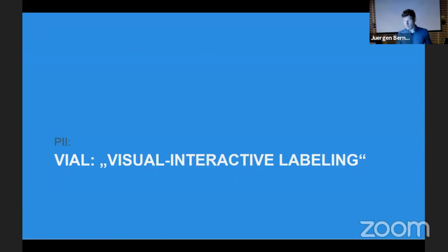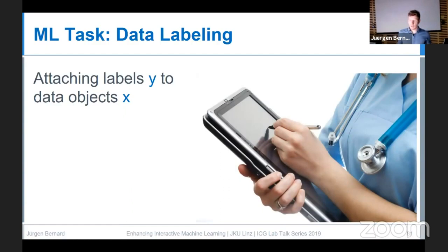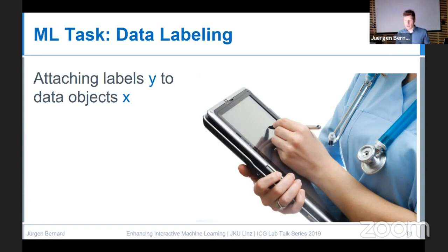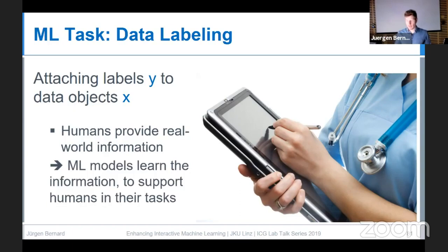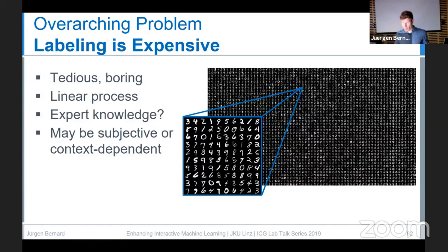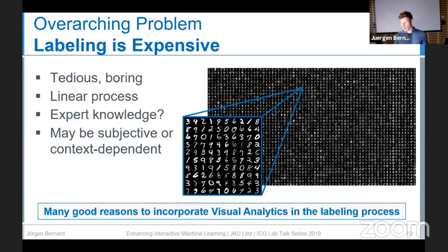This brings me to the second part: VRL — visual interactive labeling. The idea of data labeling, strongly motivated by supervised machine learning, is to attach labels Y to data objects X. Humans provide this real-world information, and machine learning models learn it to support humans in their tasks. The problem is that labeling is expensive: it's a tedious, boring, roughly linear process that may require expert knowledge and can be subjective or context-dependent. There are many good reasons for incorporating visual analytics into this labeling process.